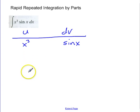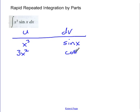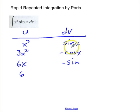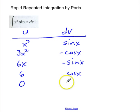In the left column I'm going to take the derivative, and in the right column I'm going to take the antiderivative. So I go 3x squared, and the antiderivative of sine is negative cosine. Then 6x, and the antiderivative of negative cosine is negative sine. Then 6, and the antiderivative of negative sine is positive cosine. The derivative of 6 is 0, and the antiderivative of cosine is sine.